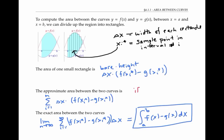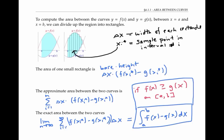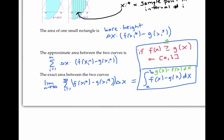This formula only works if f of x is greater than or equal to g of x on the interval from a to b. That inequality guarantees that the expression f of x sub i star minus g of x sub i star will be a positive number — we want a positive height for our rectangle so that we'll get a positive area. If instead f of x is less than or equal to g of x, then you'll need to switch around your subtraction and take the integral of g of x minus f of x dx. One way to remember what to do is to write the integral from a to b of the top y value minus the bottom y value dx, replacing those with functions of x before you integrate.